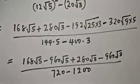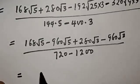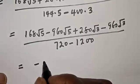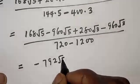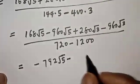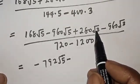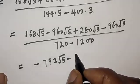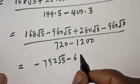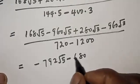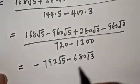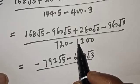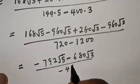This equals 168 root 5 minus 960 root 5 plus 280 root 3 minus 960 root 3, over 720 minus 400 times 3, which is 1200.